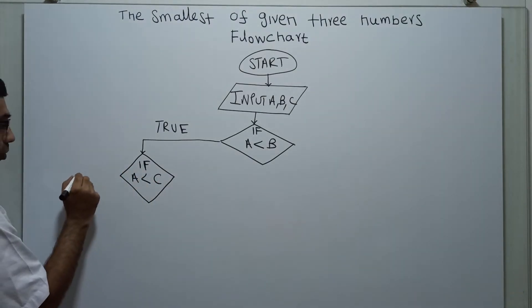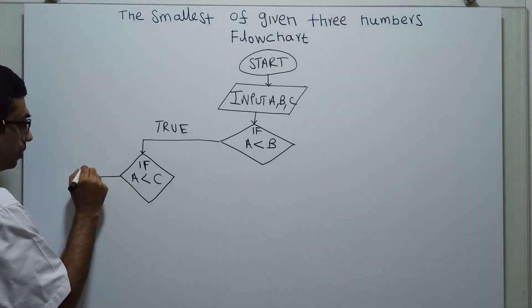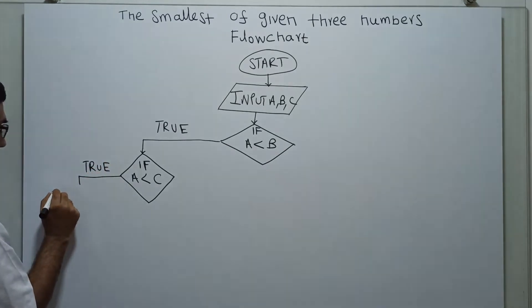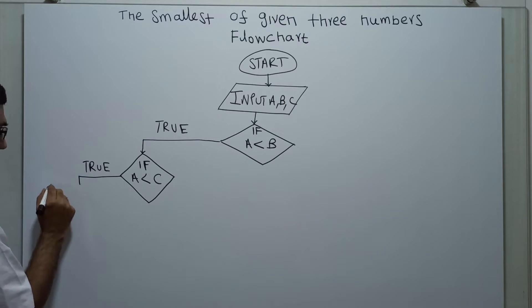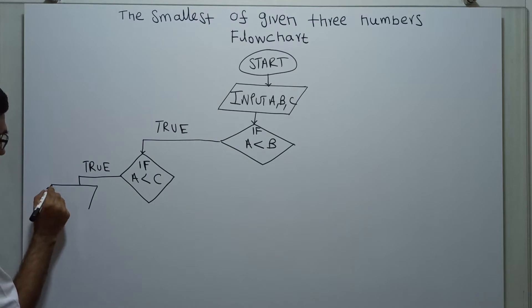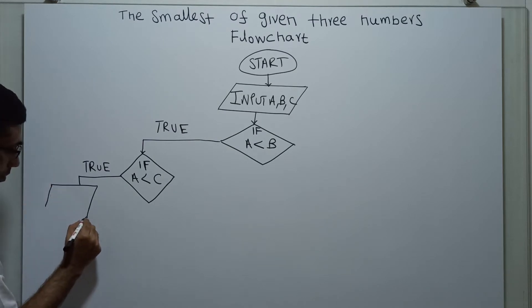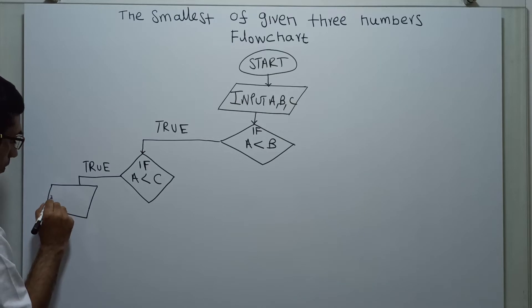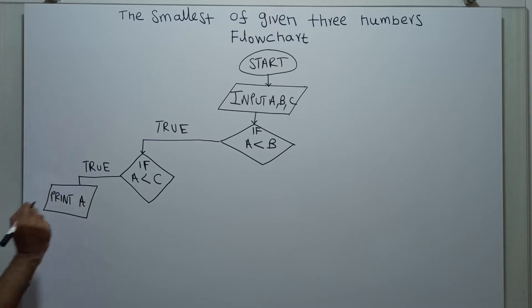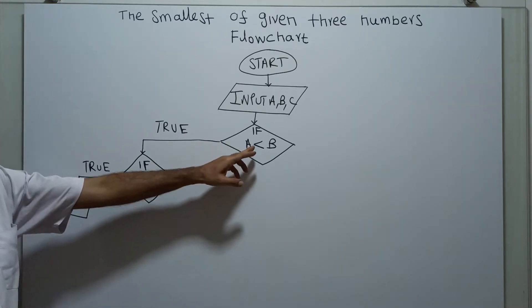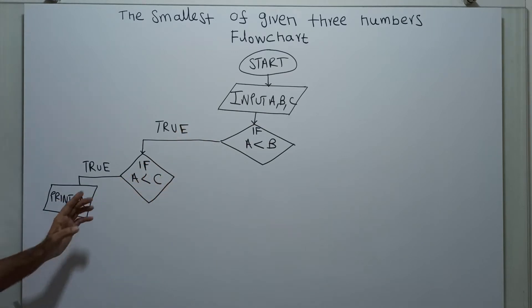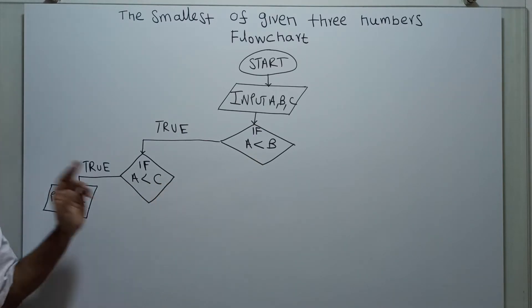If A less than C is also true, I am printing A. A is less than B — this is true. Then A is less than C — then the smallest is A, because A is less than B and A is less than C.